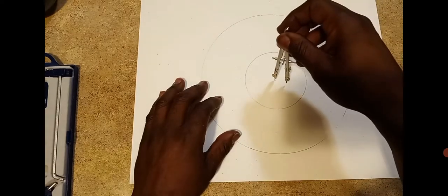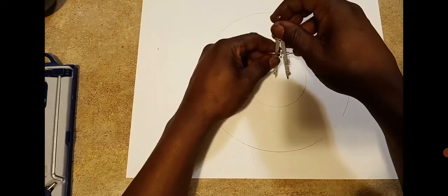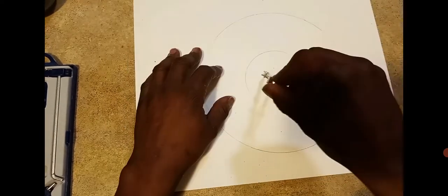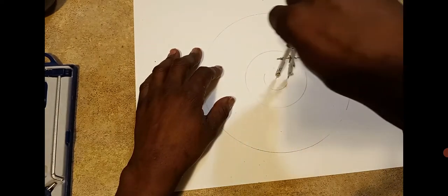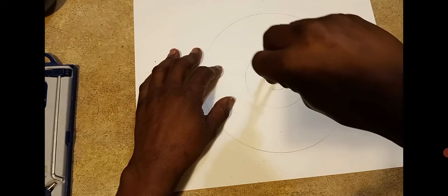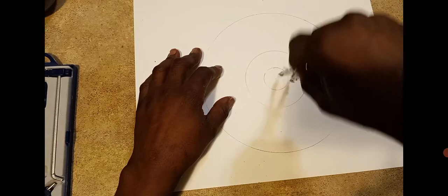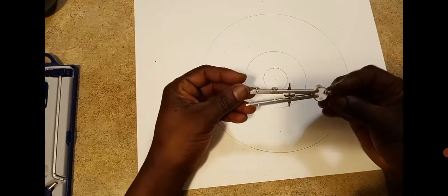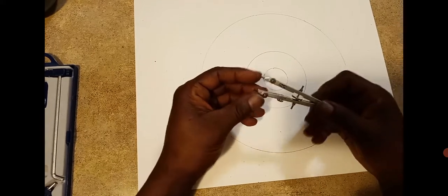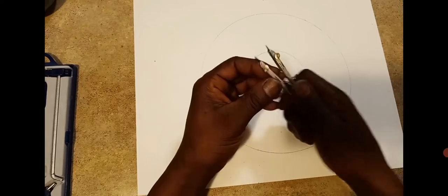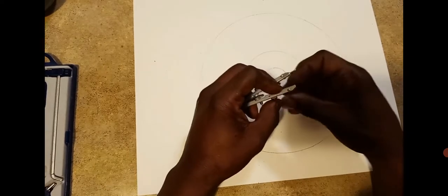It also comes with this mini compass that comes in handy for doing smaller things a little bit quicker. I'm not the best with compasses anyway, so I use the small one for small circles, the big one for big circles.